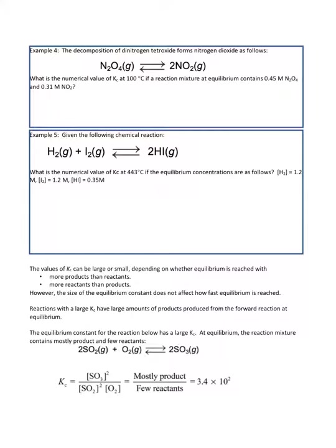We're going to start off with a little bit of review, calculating Kc again. In example 4, the decomposition of dinitrogen tetroxide forms nitrogen dioxide as follows: one mole of dinitrogen tetroxide forms 2 moles of nitrogen dioxide.